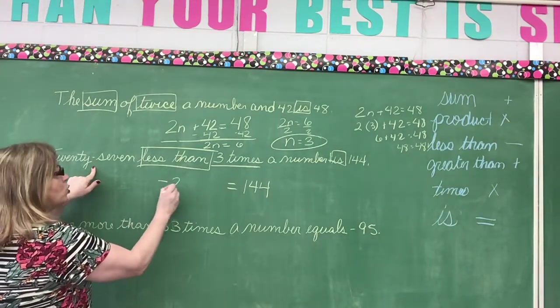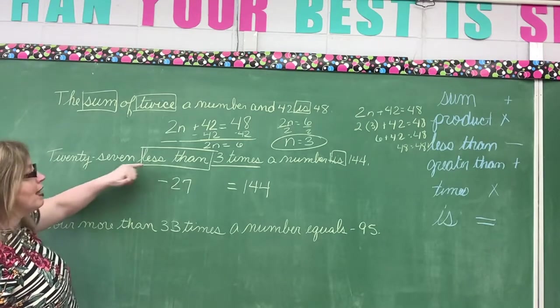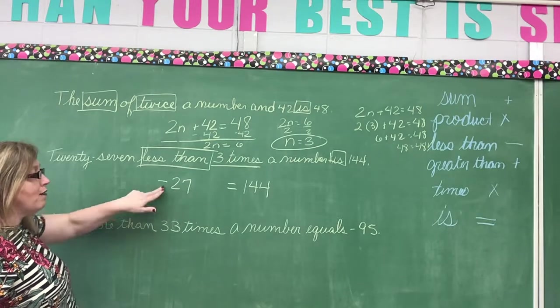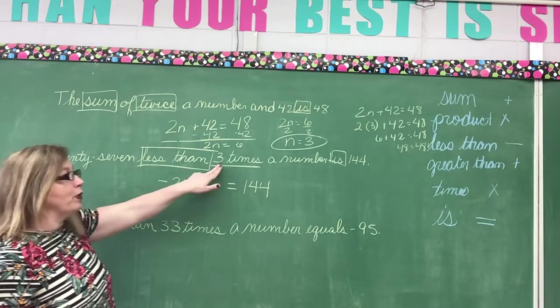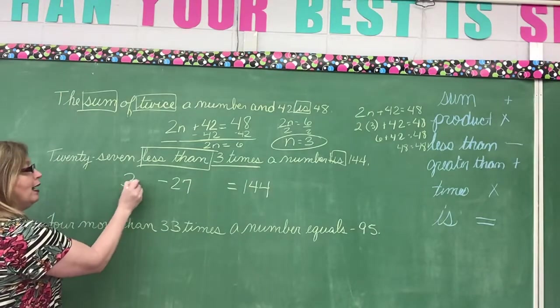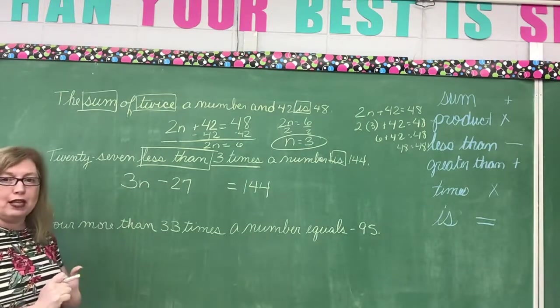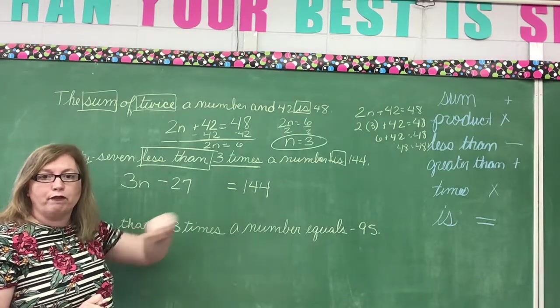Okay. So 27 less than. So I'm going to take 27 away from something. What am I taking it away from? Three times a number. So we're going to put 3n because 3 times a number. So 3n minus 27 equals 144.